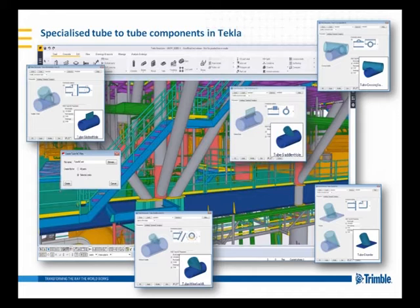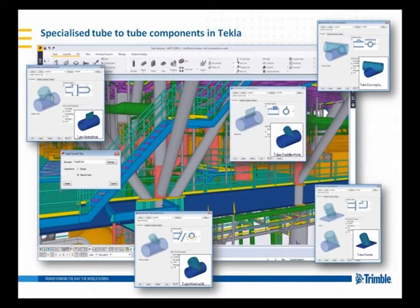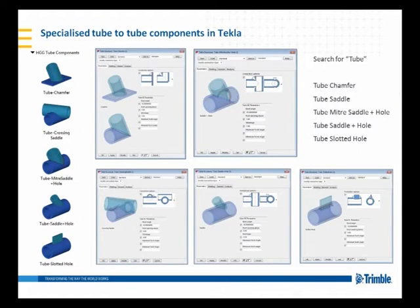Here you can see within Tecla Structures 2016 the range of components that are available. These components are different from regular components because they contain many other options for linking down to the automated pipe cutting machine, such as weld preparations and so forth. If you do a search for 'tube' in the component catalogue you'll come across several components.